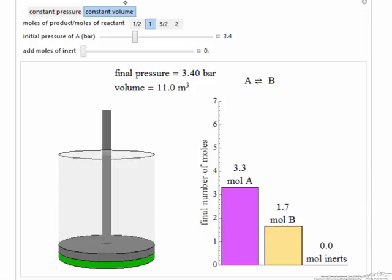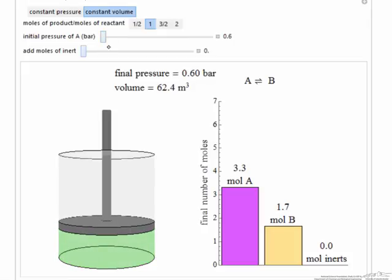But look at the constant volume case. The initial pressure determines the initial volume, and then that volume is fixed. For A goes to B, the pressure doesn't change.